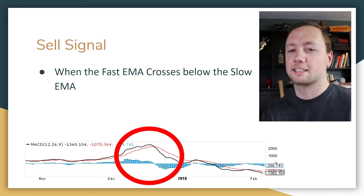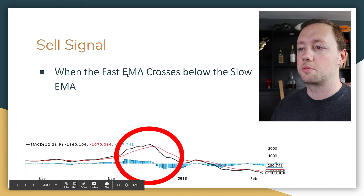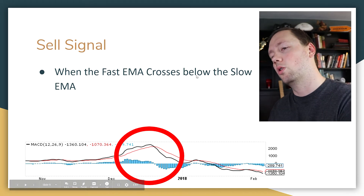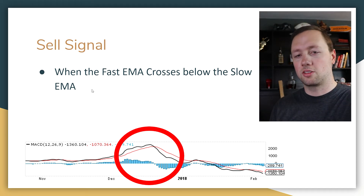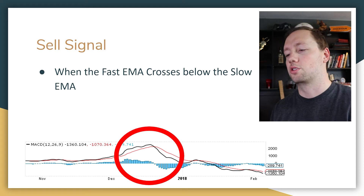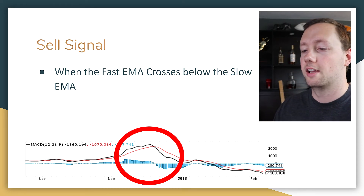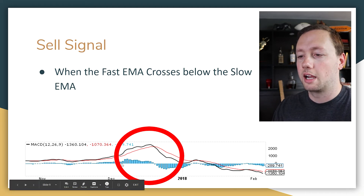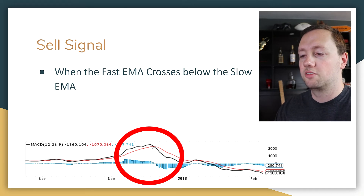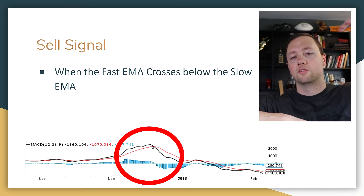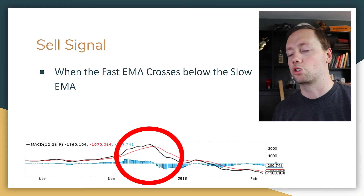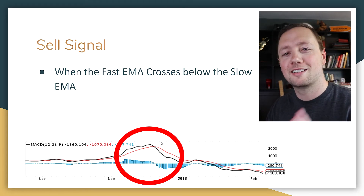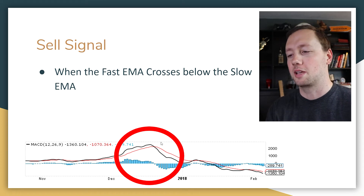Now, sell signals — it's the exact opposite. When the fast exponential moving average, the black line, crosses below the slow exponential moving average, it means the price is changing and we have a change in trend. Here is an example. The moving averages are almost intertwined going up to December, then there's a gap between the black and red line. In mid-December, there is a very clear crossover of the fast moving average below the slow moving average in a downward direction — that is our sell signal.